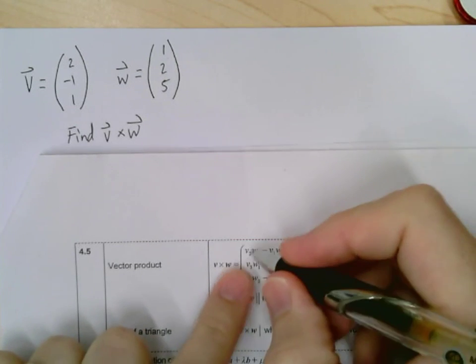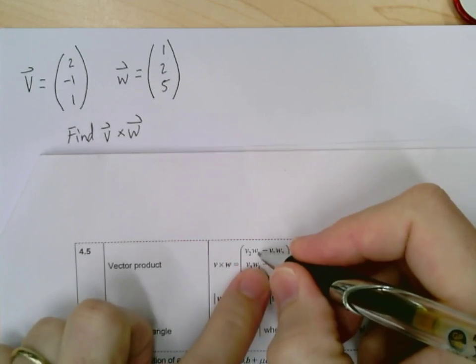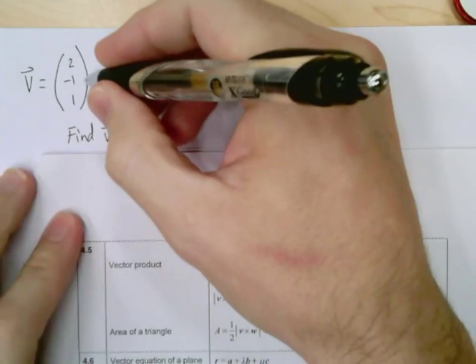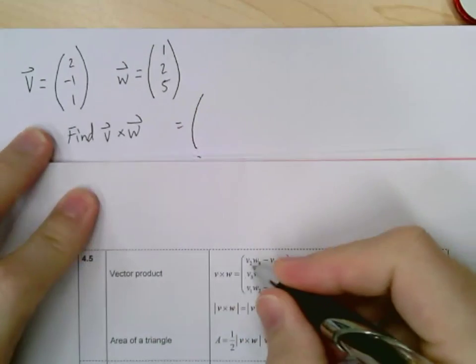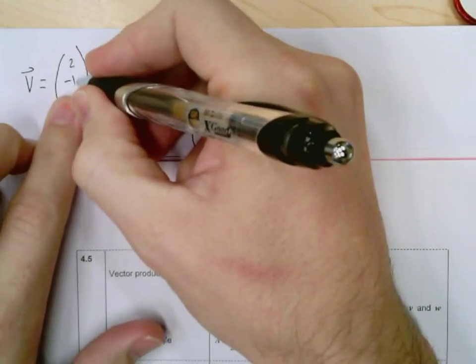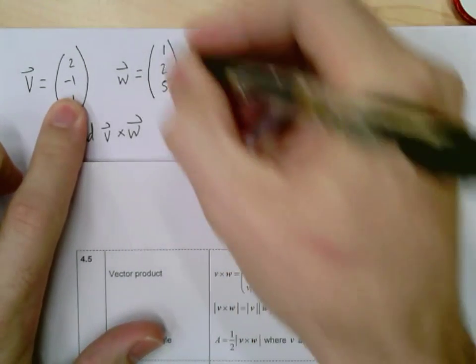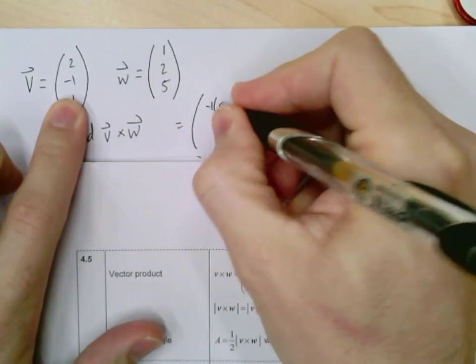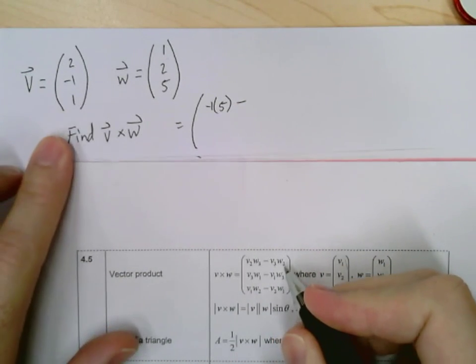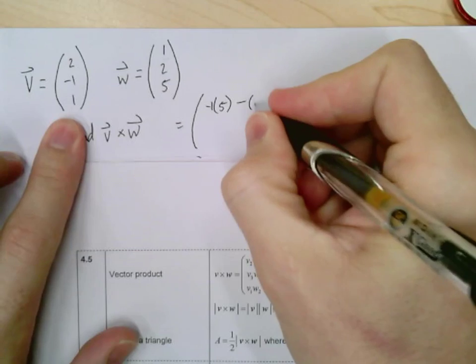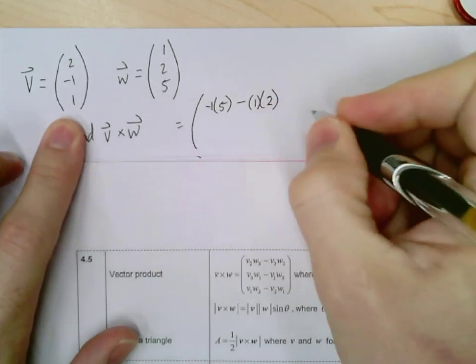Now we talked about in class how the X value comes from the Y and Z, 2 and 3, of V and W. So it's just like this. So we'll say this is equal to, so it'll be V2 times W3. So V2 is the second value in your V vector. So negative 1 times W3, so the third value there, minus, note that it's a subtraction, V3 times W2. So V3 is 1 and then W2, which is 2. Alright?